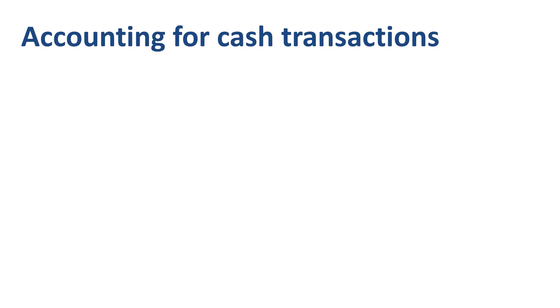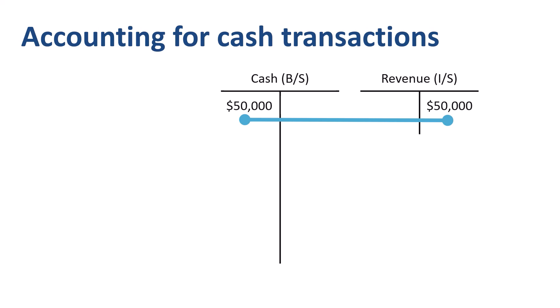As you pay and get paid for things, you debit and credit accounts. The company receives payments from customers. For the moment, all of these get recorded as revenues. Debit cash for $50,000, credit revenue for $50,000. Cash is a balance sheet account. Revenue is an income statement account.